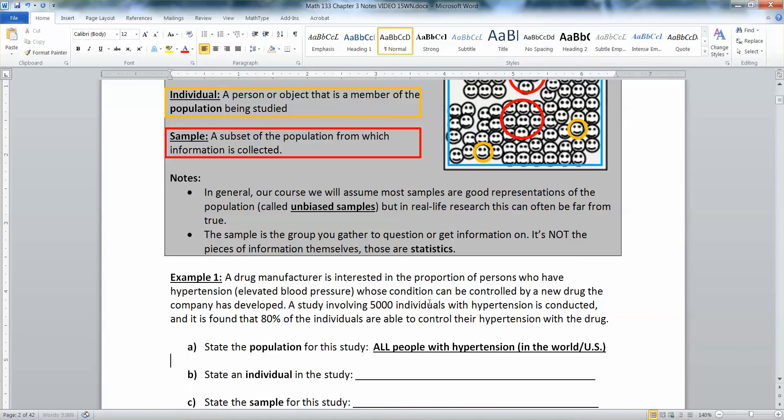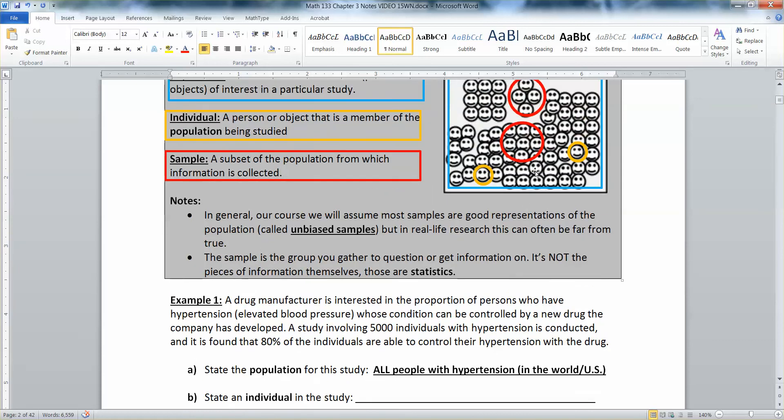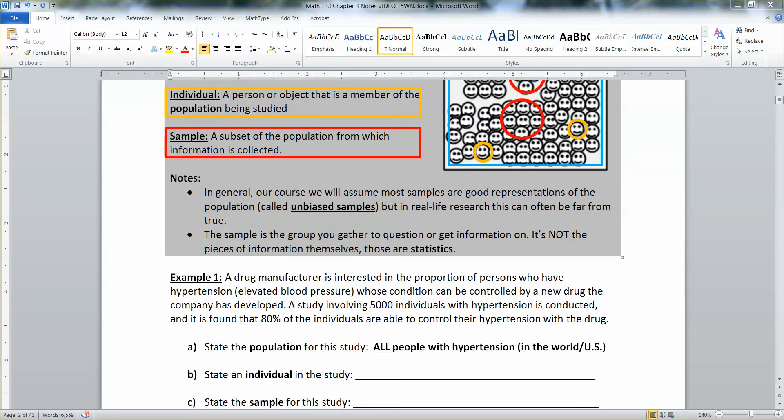It wasn't really stated whether which country it was in. I mean, it could be France for all I know, but we could say in the world or U.S. or everywhere, something like that. Now an individual would be any single person with hypertension, didn't have to be selected for the sample. So any person with hypertension at all.